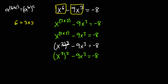Before I proceed to solve this problem, let me replace the x cubed. Let all the x cubed be equal to y. So after solving for the value of y, I will equate it back to x cubed and find the value of x. This will yield y squared minus 9y is equal to negative 8.